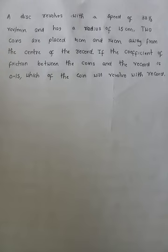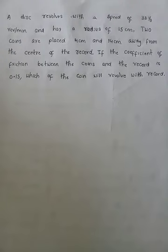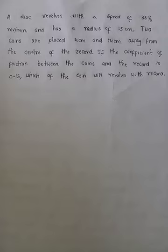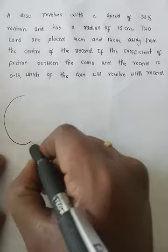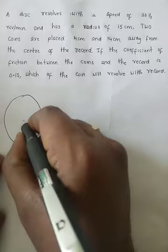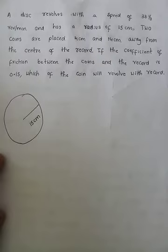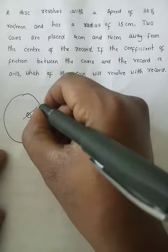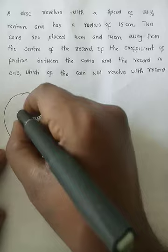The last question: a disc revolves at 33⅓ revolutions per minute with a radius of 15 centimeters. Two coins are placed 4 centimeters and 14 centimeters away from the center of the record. The coefficient of friction between the coins and the record is 0.15. Which coin will revolve with the record? The disc is rotating and we placed two coins at different distances from the center.